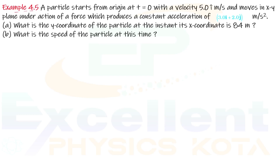Chapter 4, Example number 4.5. A particle starts from the origin at t=0 with a velocity of 5î m/s and moves in the xy-plane under the action of a force which produces a constant acceleration of 3î + 2ĵ m/s². What is the y-coordinate of the particle at the instant when its x-coordinate is 84m? What is the speed of the particle at this time?